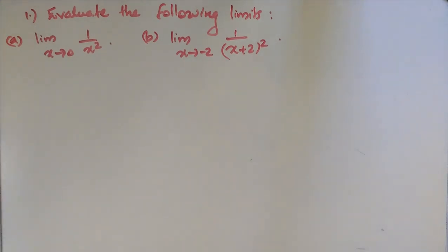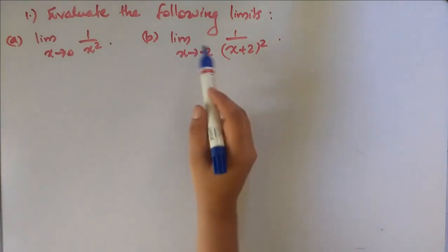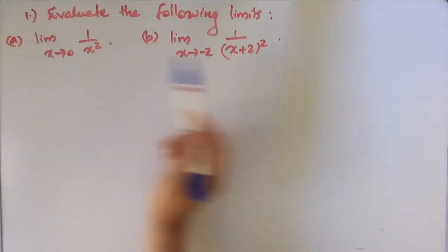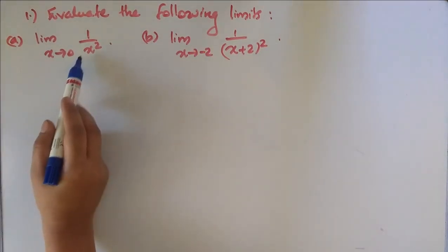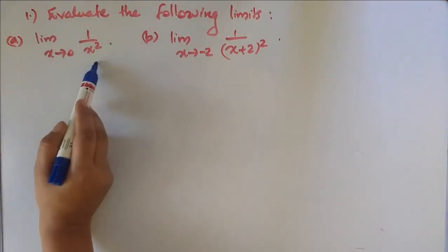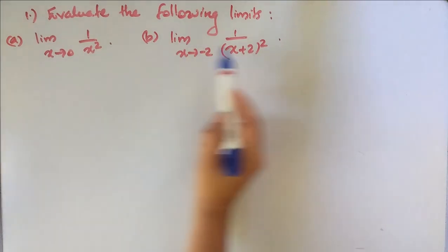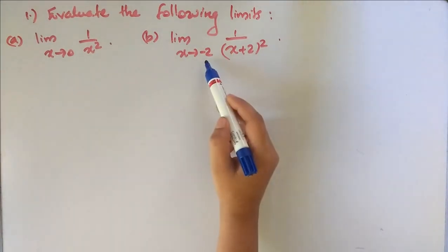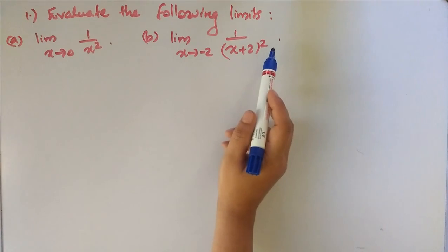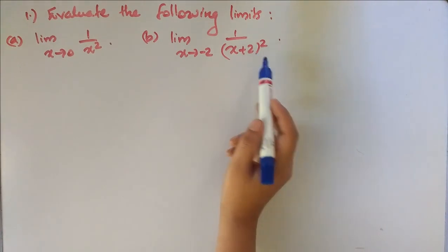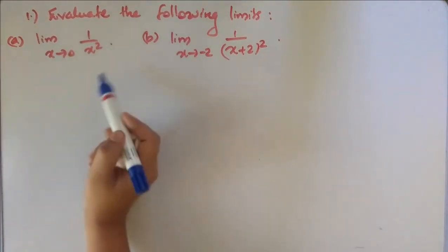Today we will discuss some problems. The question is: evaluate the following limits. First one: limit x tends to 0 of 1 by x squared. Second one: limit x tends to minus 2 of 1 by (x plus 2) all squared.